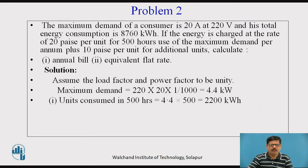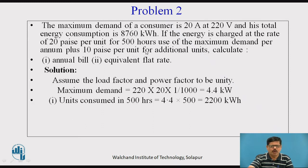Now let us see the second problem. In this problem, it is given that the maximum demand of a consumer is 20 ampere at 220 volts, and its total energy consumption is 8760 kWh. If the energy is charged at the rate of 20 paise per unit for 500 hours use of the maximum demand per annum, plus 10 paise per unit for additional units, calculate the annual bill and equivalent flat rate. For this maximum demand, we will assume the load factor and power factor to be unity.